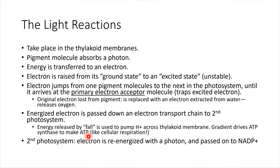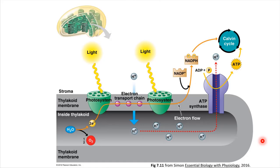Finally, the electron gets re-energized again with a little bit more light and handed off to an electron shuttle molecule. Let's look at a picture — pictures are very helpful in situations like this. So we are inside of a chloroplast full of these thylakoid membranes, and we're just going to zoom in on one little thylakoid here.